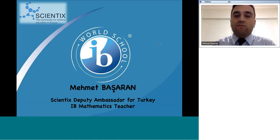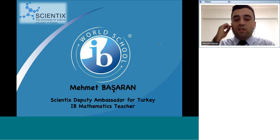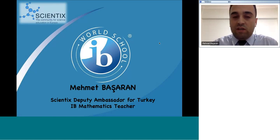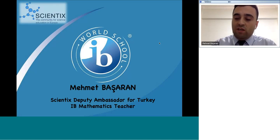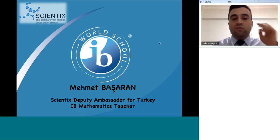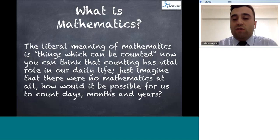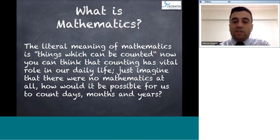What is the definition of mathematics? From Britannica's Concise Encyclopedia, mathematics is the science of structure, order, and relation that has evolved from counting, measuring, and describing the shapes of objects. It deals with logical reasoning and quantitative calculations. The literal meaning of mathematics is 'things which can be counted.' Counting has a vital role in our daily life — just imagine there were no mathematics. How would it be possible for us to count days, months, and years?